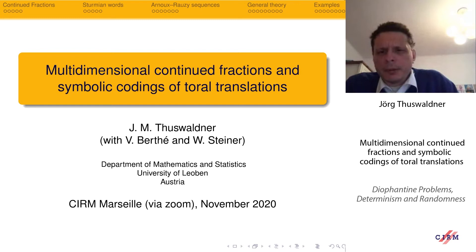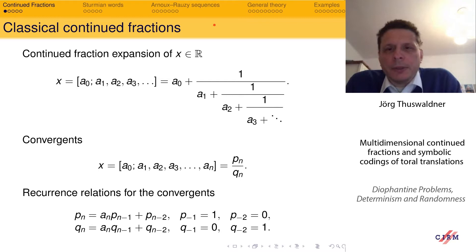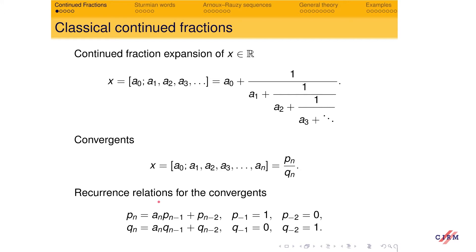Let me start with some well-known objects. First, the classical continued fractions — the continued fraction expansion of x. I just introduce the notation here. The convergents will be denoted by P_N over Q_N, and there are well-known recurrence relations that allow us to calculate these quantities.